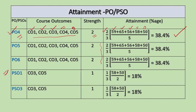Let us take another example: PSO1. PSO1 was addressed by CO3 and CO5. For PSO1, the mapping strength was 1, so the scale factor is 1/3. The attainment level for CO3 was 58% and for CO5 was 50%. Adding these and dividing by 2 gives the average attainment level for CO3 and CO5. The attainment level for PSO1 comes out to be 18%.